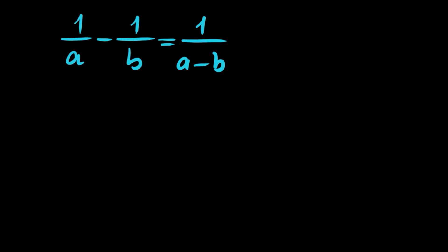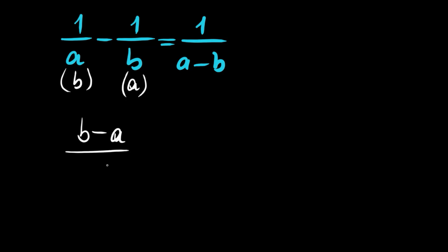Now let's make a common denominator, multiplying the first term by b and the other by a. So we have b minus a, all divided by a times b, is equal to 1 over a minus b.